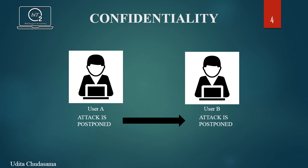The first principle in the CIA triad is confidentiality. Confidentiality is the ability to hide information from those people or users who are unauthorized to view that information. As you can see in the image, if there is a user A and a user B — user A is the sender and user B is the receiver — user A has a message: 'attack is postponed.' User A will send the message to user B. To achieve confidentiality, there should be some mechanism so that the message is received only by the intended receiver. Any third party should not be able to read this message going from A to B.